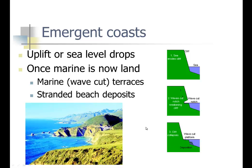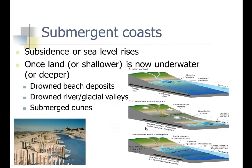You also have submergent coasts where the land goes down or the water comes up — once land is now underwater with drowned beach deposits. Here's a comparison: an emergent beach where the stuff that was underneath the water is now above water, giving us wave cut platforms. And a submergent coastline where things that were above water, like a sandbar, are now below water.